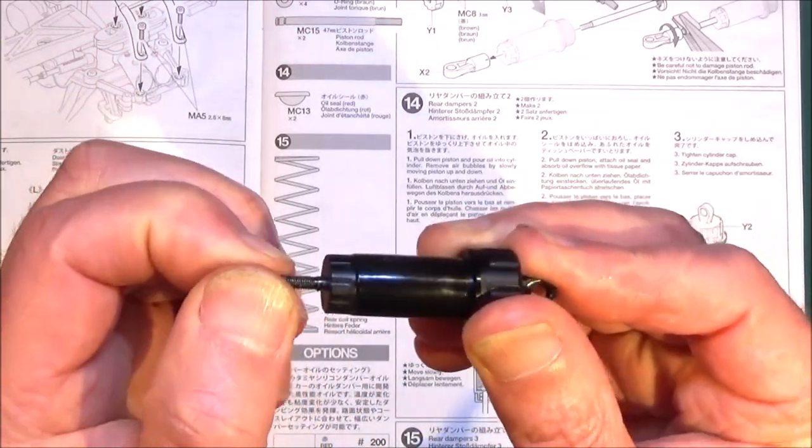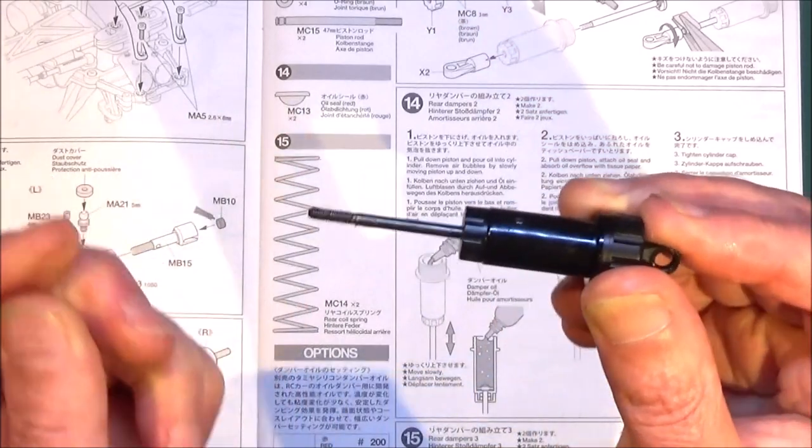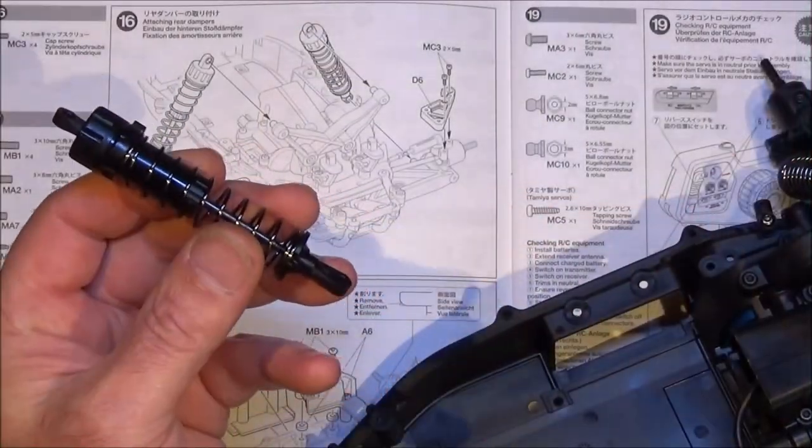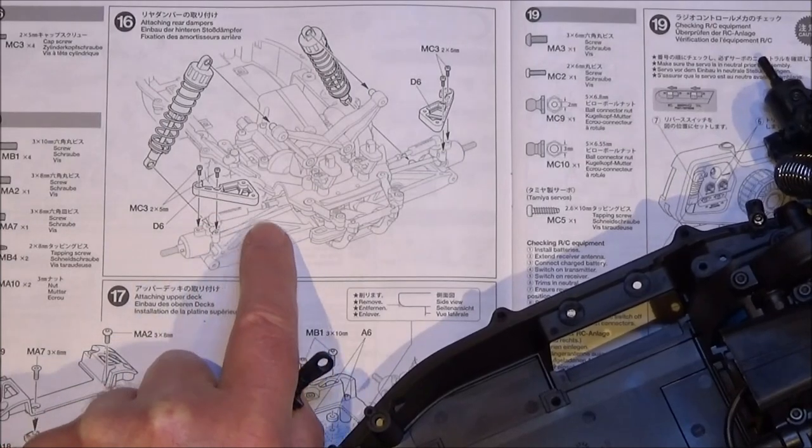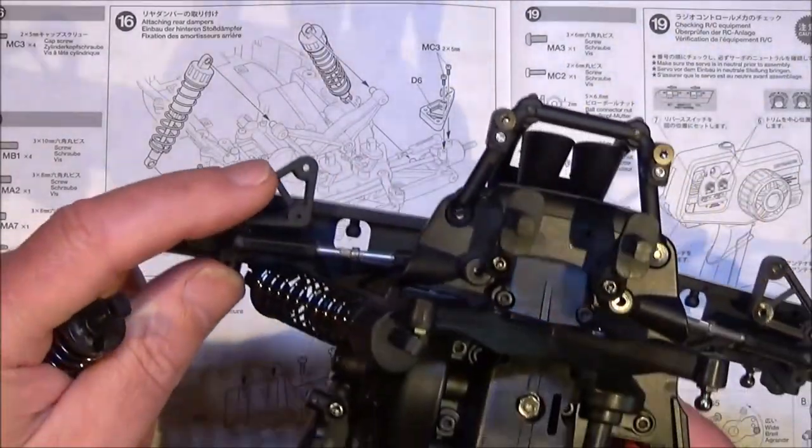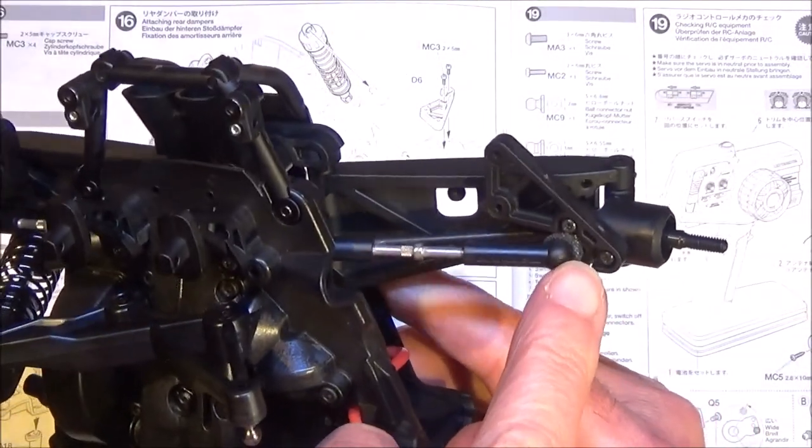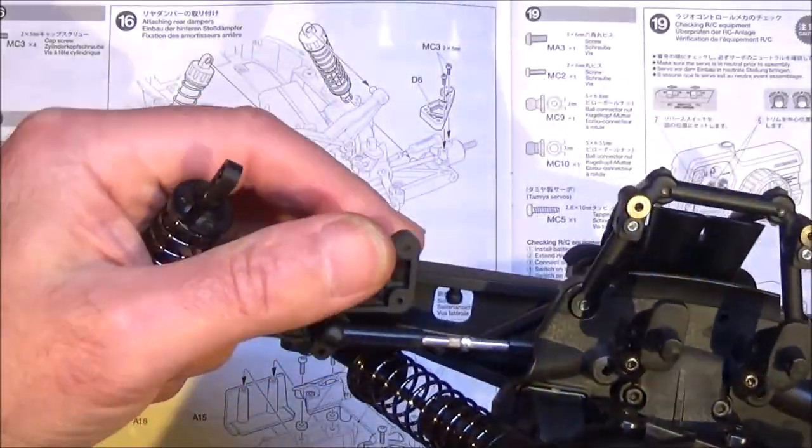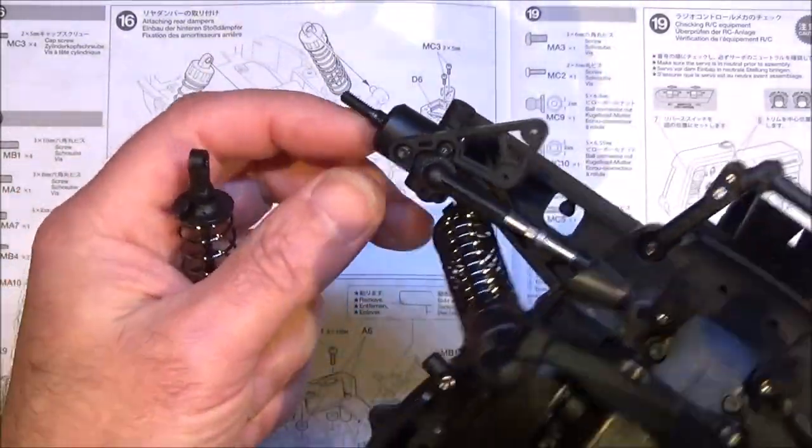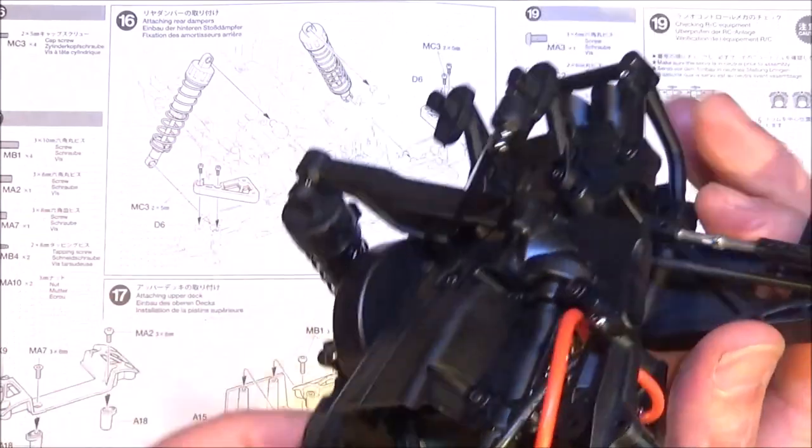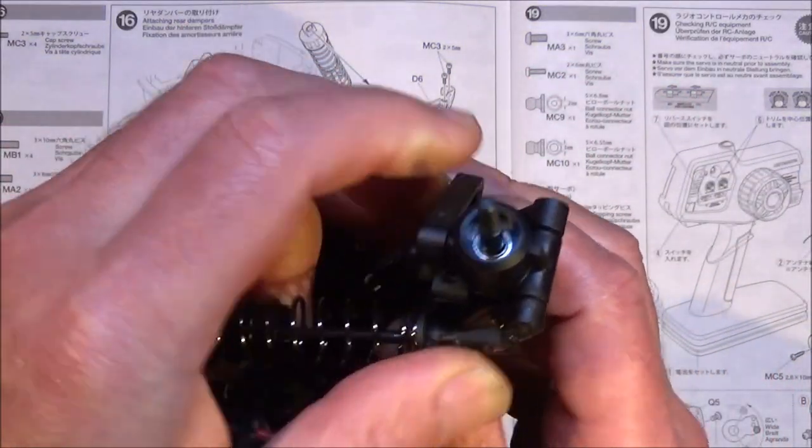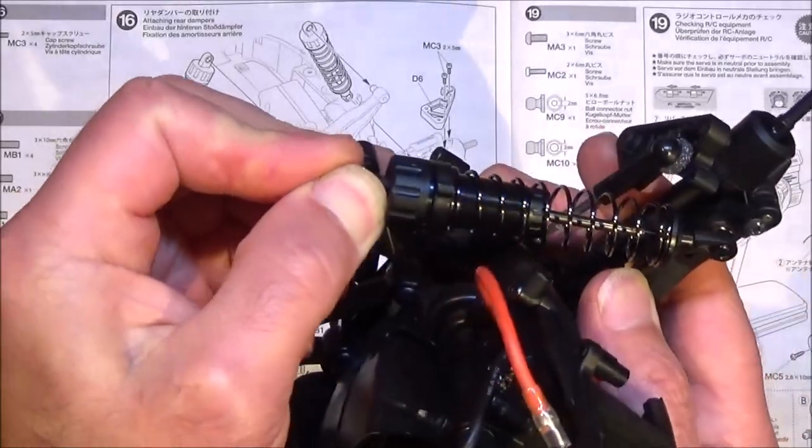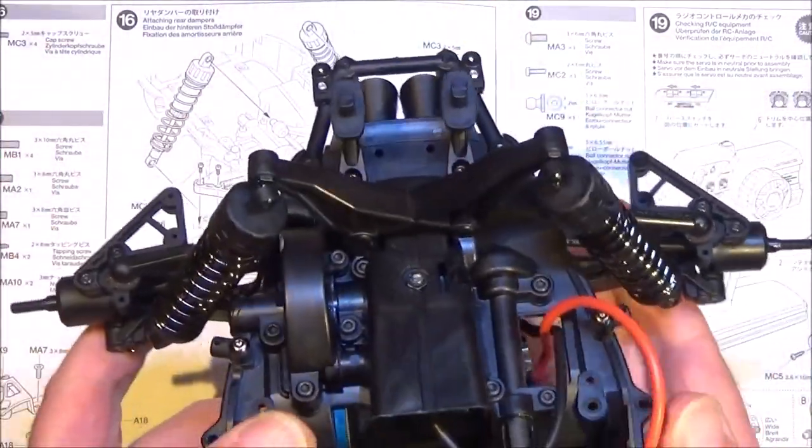Okay, all we need to do now is get the spring and the other parts on. So with both your shocks made up, step 16 is just popping those on and then you've got these two parts here which are D6, these plastic parts with two tiny little cap screws. I think they're for holding on the mud guards, I could be wrong, but I think that's what they're for. So this step is just popping on the shocks like so.